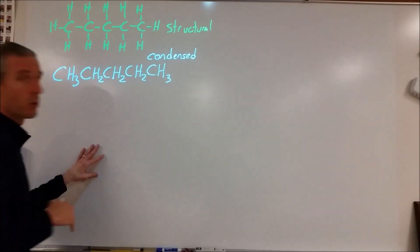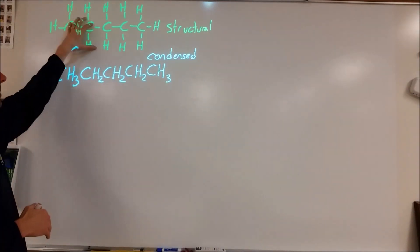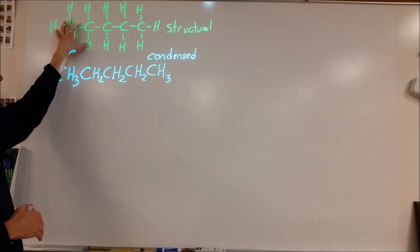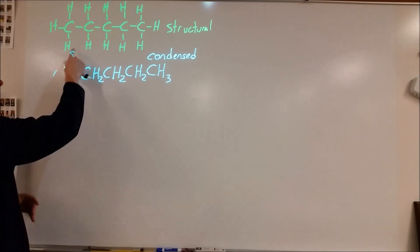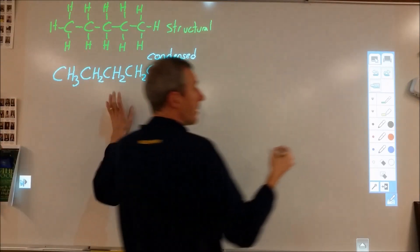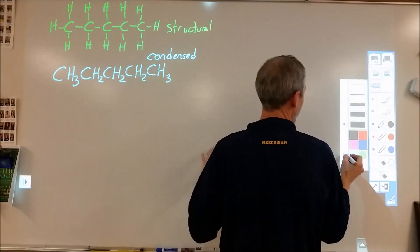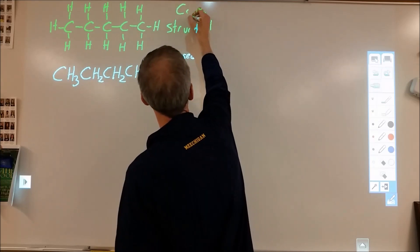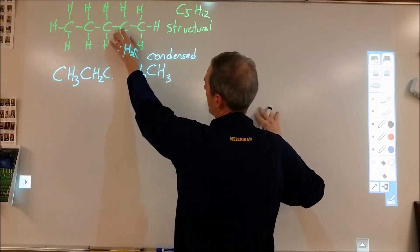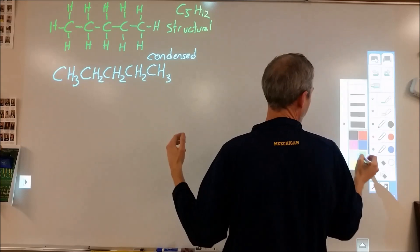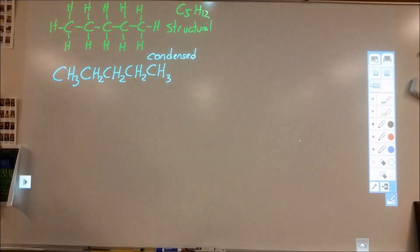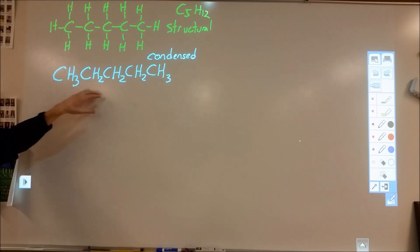There are different ways to represent organic molecules, assuming you're familiar with Lewis structures. We typically start with the structural representation or Lewis structure. This is C5H12, and here is another way to represent it. I want you to look at these and consider how they represent the same thing differently, and what the advantages and disadvantages of each are.